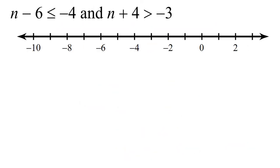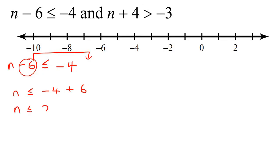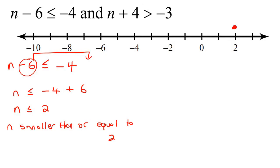Now sometimes they do the 'and' question written out separately. When they do that, you just go solve each one individually. Starting with the first one — take this minus 6 over to the other side — you end up with x plus 6, and you'd end up with 2. So what this says is that n is smaller than or equal to 2. Let's draw that on the number line.